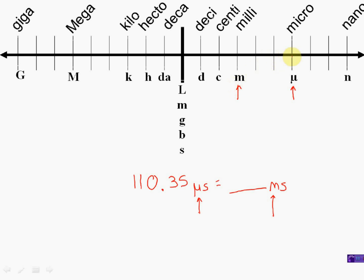So I'm going to go one, two, three places to the left. I literally just take my decimal point and I go one, two, three places to the left. So how many milliseconds? Put a zero there first. 0.110. Three, five milliseconds.